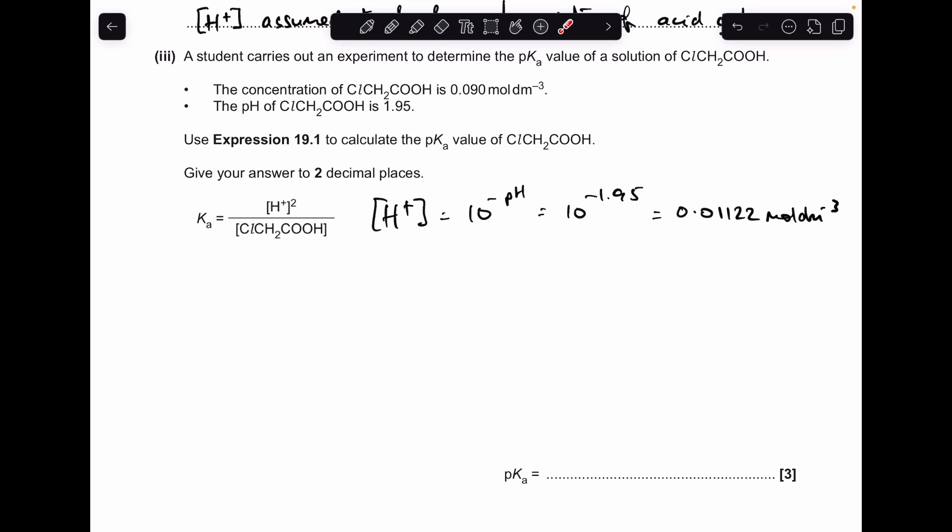So first thing we need to do is to convert the pH into an H+ concentration so we can go and square it. So H+ concentration 10 to the minus pH, so 10 to the minus 1.95. So that number there. So if you put those numbers into the Ka expression, we're getting Ka equal to 1.39 times 10 to the minus three, and all that you do to turn it into pKa is minus log, so it's coming out at 2.85.